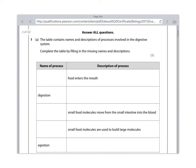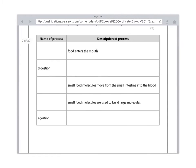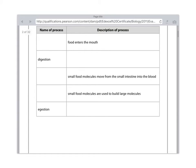Next part, small food molecules move from the small intestine into the blood. So that's going to be absorption. Quite straightforward, that question. The next part is slightly trickier because they're saying small food molecules are used to build large molecules. The word you need there is assimilation.